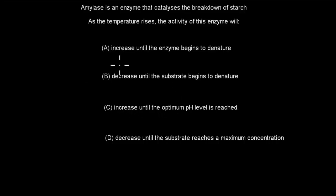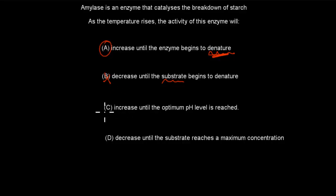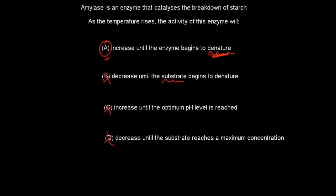The correct answer is A — enzyme activity will increase as temperature rises because enzymes don't mind higher temperatures up to a point, then they will denature. B is incorrect — it has nothing to do with the substrate denaturing; it's the enzyme that denatures. C is incorrect because we're talking about temperature, not pH. D is also incorrect — we're not talking about substrate concentration. So A is correct.